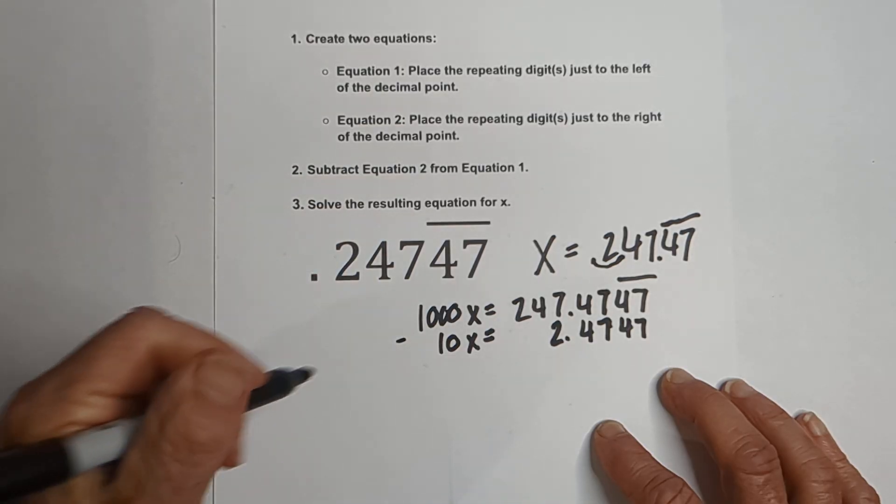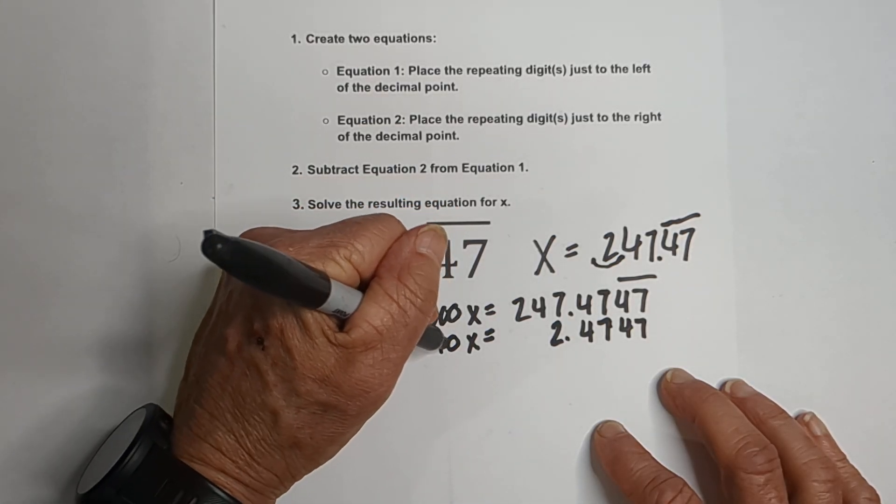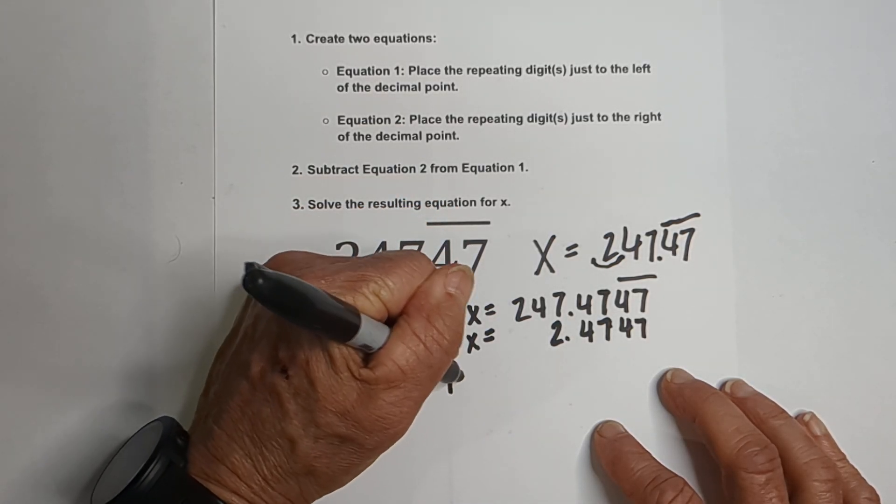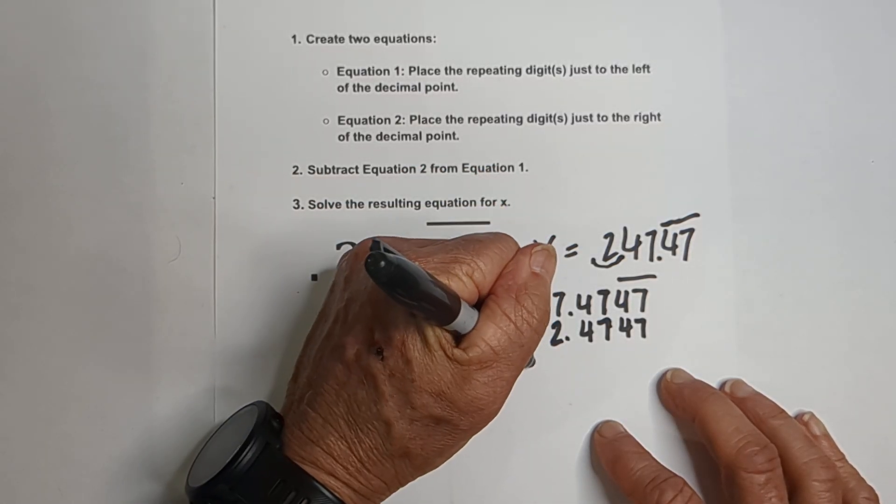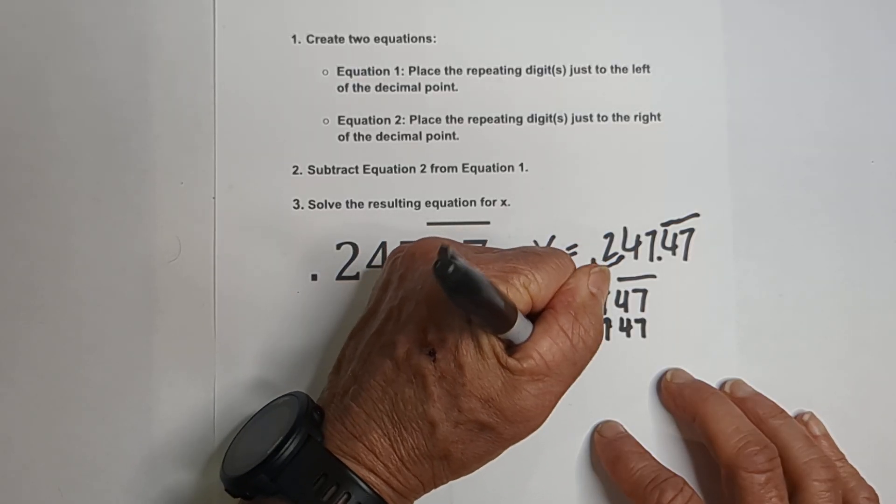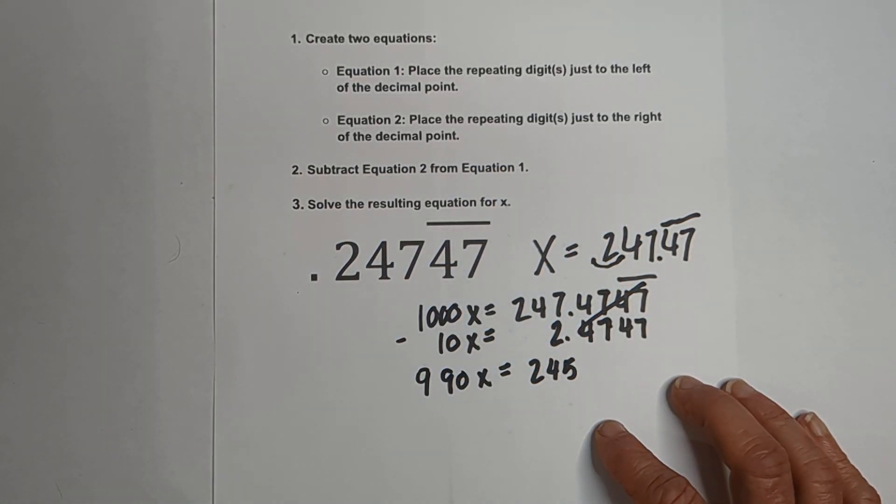Now we just subtract. 1,000X minus 10X is 990X equals, and 247 minus 24 is 245. And all of this cancels.